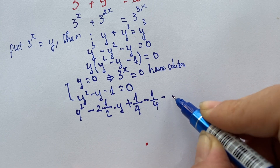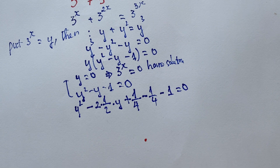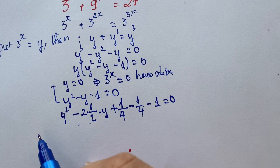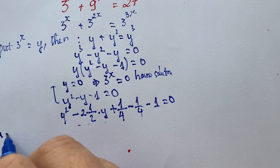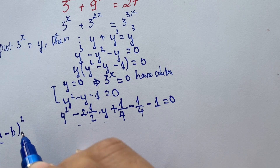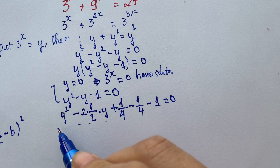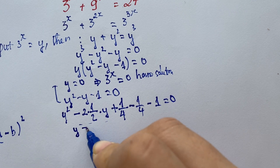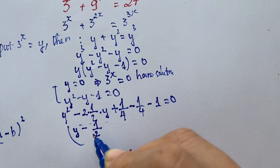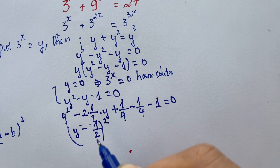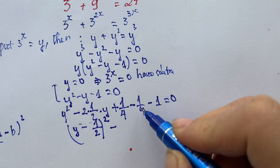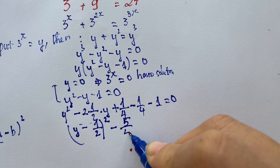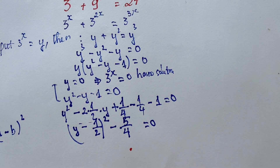And next, everyone can see for this expression it's the same form as a minus b squared — it's the identity, right? And squared, you can write y minus one half, power squared, minus one fourth minus 1 is equal to 5 fourths, and it's equal to 0.